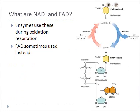During these lectures, I'll be frequently referring to a couple of molecules called NAD+ and FAD — those are the oxidized versions. NADH is the reduced version of NAD+, and FADH2 is the reduced version of FAD. These are temporary molecules that temporarily store energy until that energy can be transformed into energy used to make ATP.